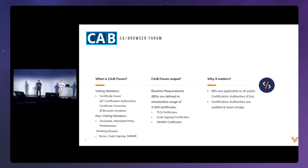There are only around eight or so CAs that currently have over a million valid certs out in the ecosystem. The certificate consumers are your typical Chrome, Mozilla, Apple, Brave, Opera — all the different browsers. There are also hardware vendors like Cisco, who is a big certificate consumer and has their own root store. Those are the voting members for the CA Forum.